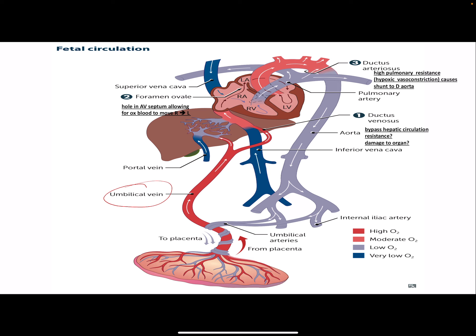So a couple of features evolved over millions or billions of years. The ductus venosus allows us to bypass hepatic circulation. Then we have the foramen ovale, going from the right atrium to the left atrium — the right atrium is higher in pressure in fetal life, while the left atrium is higher in pressure in adulthood. And then the ductus arteriosus, going from the pulmonary artery to the aorta.